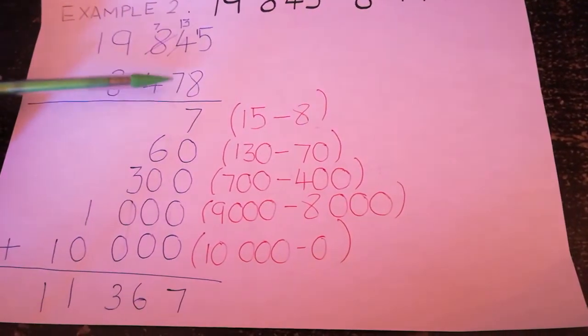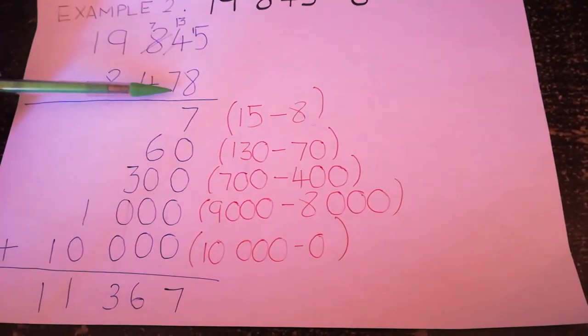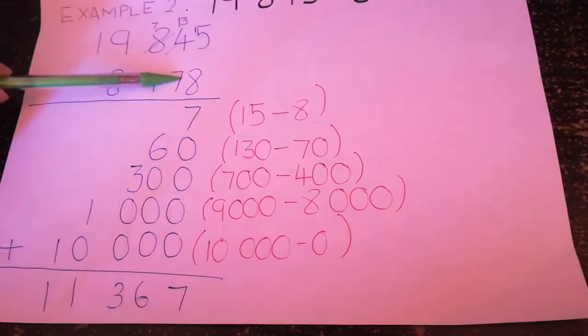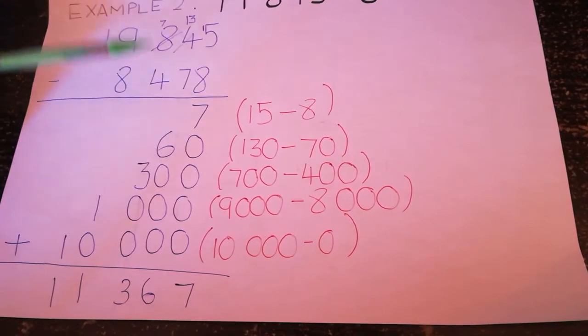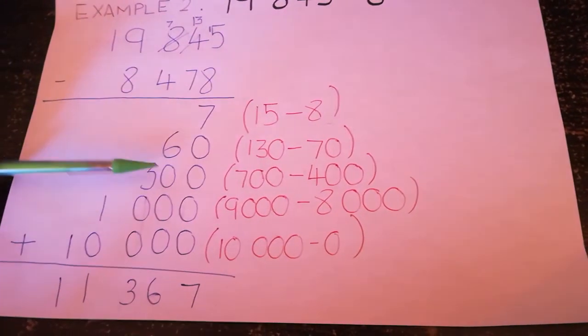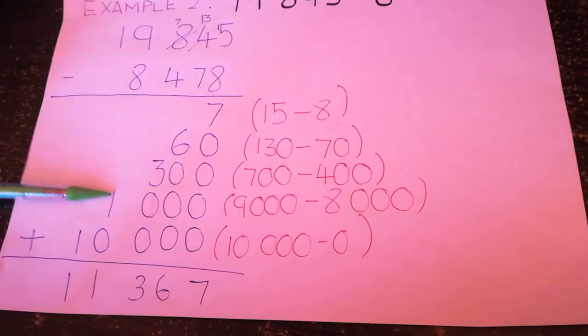Then we have 30 minus 70. 30 cannot minus 70. You borrow 100 from here. So it's going to be 130 minus 70. You're going to get 60. This became a 7. So 700 minus 400 is 300. 9,000 minus 8,000 is 1,000.